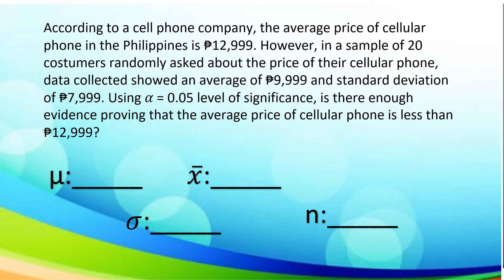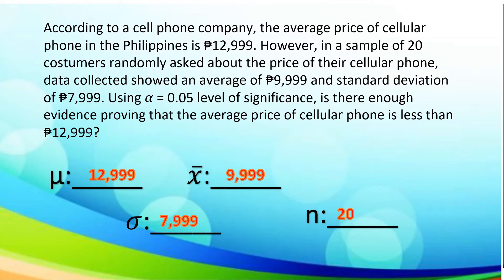First, let us now determine the unknowns. Since the given mean of the population is 12,999, and the mean of the sample is 9,999, the standard deviation of the given population is 7,999, and the number of samples is 20. Later on, let us determine if the given evidence of proving the price of the cellular phone is true or less than 12,999.